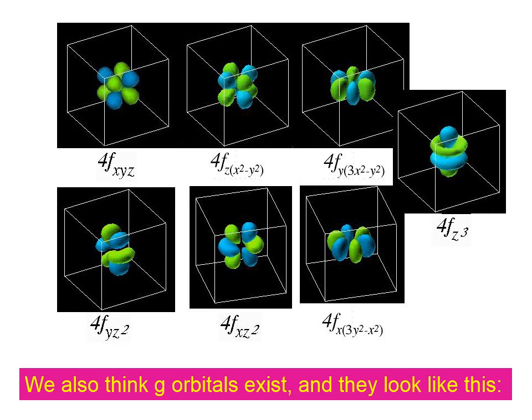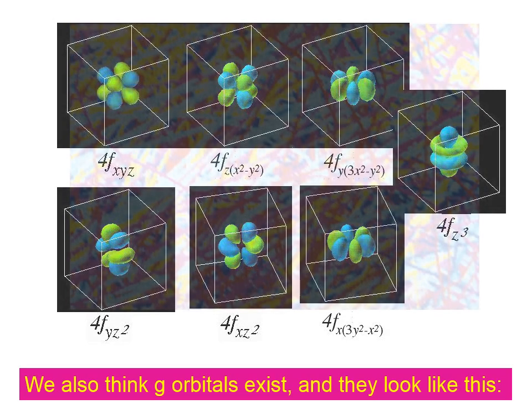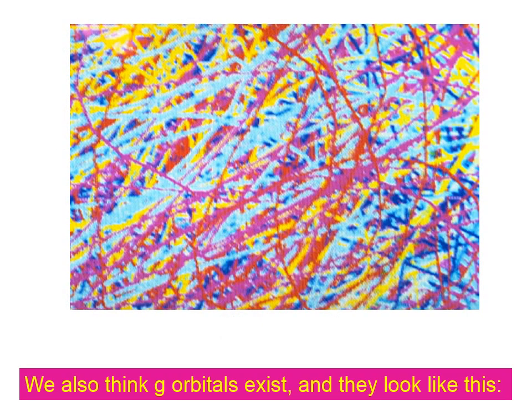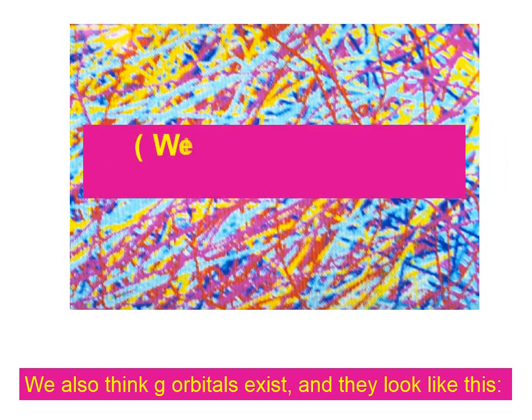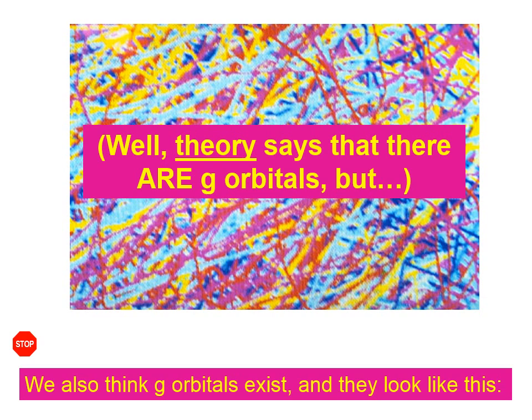We also think G-orbitals exist. We have S-orbitals, P-orbitals, D-orbitals, F-orbitals, and this is what G-orbitals look like. No, they don't - this is just a complete mess. Theory says there are G-orbitals, but I'm not aware that we've done anything very useful with them. However, that's what science is all about: pushing the limits, learning things we couldn't have even imagined previously.